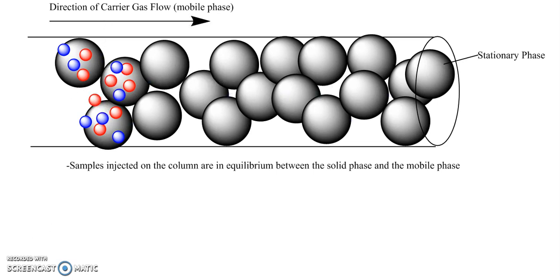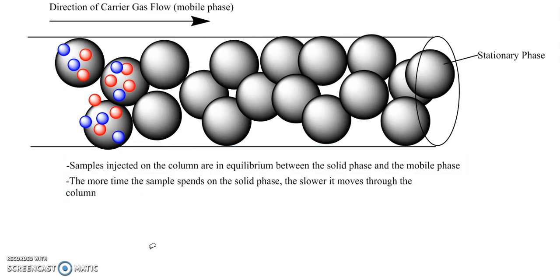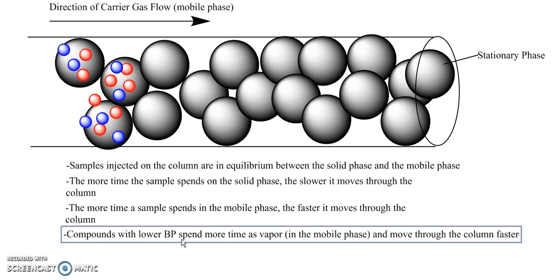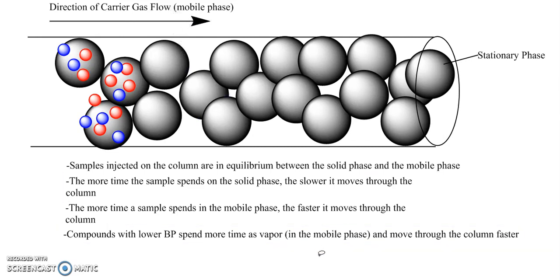The more time the sample spends on the solid phase, the slower it moves through the column. The more time a sample spends in the mobile phase, the faster it moves through the column.